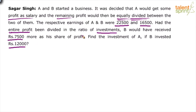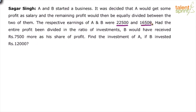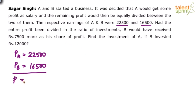According to case one, the respective earnings of A and B were 22,500 and 16,500. So profit of A is 22,500 and profit of B is 16,500, making total profit P equal to 22,500 + 16,500 = 39,000. The total profit remains the same in both cases — what changes is the distribution, the way it is divided.